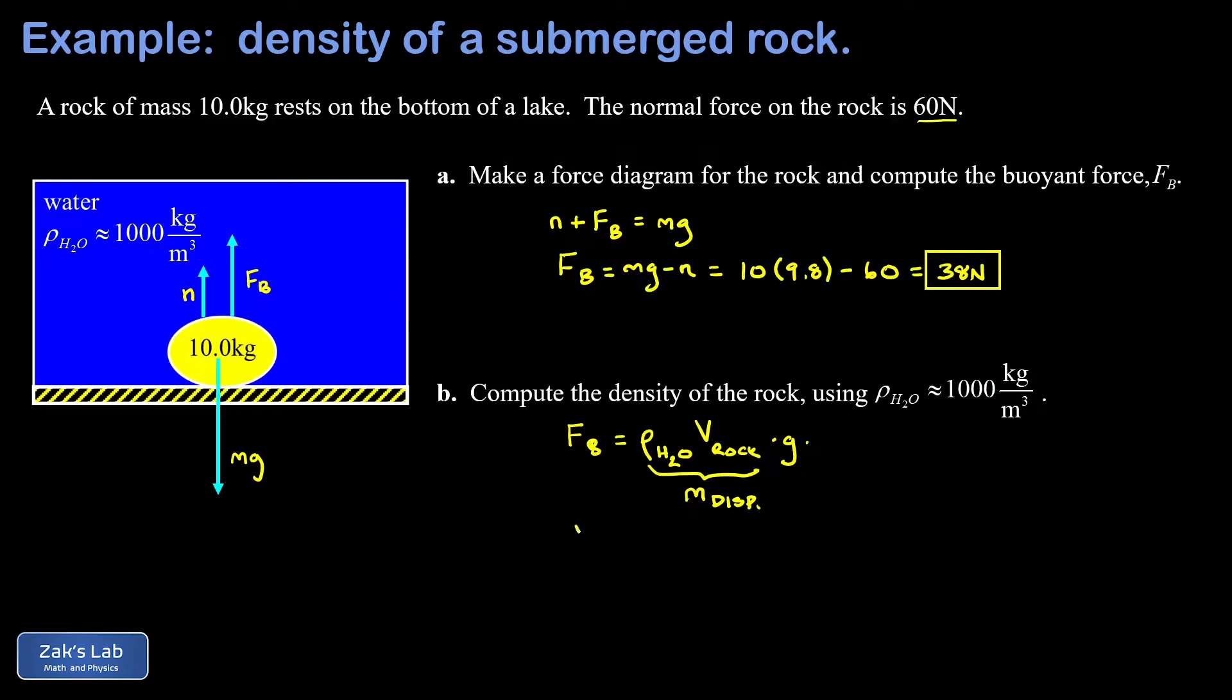Archimedes' principle says that the buoyant force is equal to the weight of fluid that's been displaced, so we're able to solve this for the volume of the rock and that's the buoyant force divided by the density of water times g. Plugging in the numbers we have a buoyant force of 38 newtons, the density of water is approximately 1000 kilograms per cubic meter, and g is 9.8.